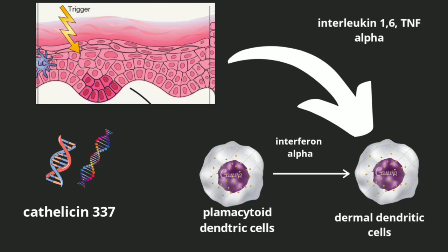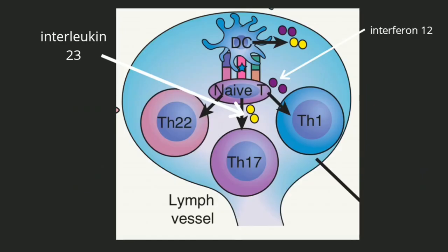Next, these myeloid dendritic cells will go to the lymph node and present the antigen to the naive T cells. Two important interleukins are produced by the dendritic cells: interleukin-12 and interleukin-23. Interleukin-23 is a very important interleukin in both the pathogenesis and treatment of psoriasis. Under the influence of these interleukins, naive T cells differentiate into three subtypes: T helper type 1, T helper type 17, and T helper type 22. Specifically, interleukin-12 drives differentiation into Th1, and interleukin-23 drives differentiation into Th17. The major response in the pathogenesis of psoriasis is T helper type 1.